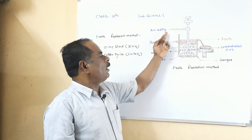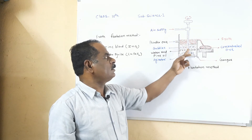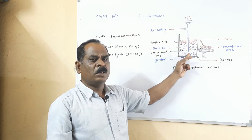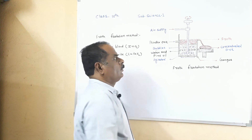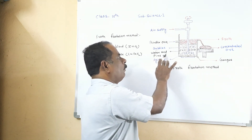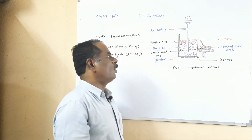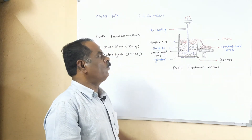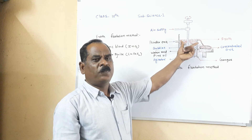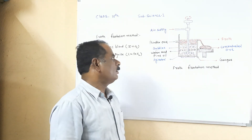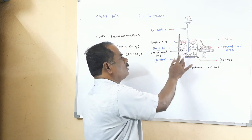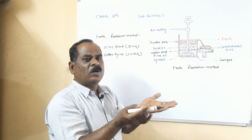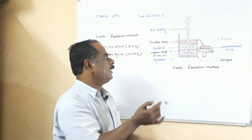When you blow high-pressure air through the agitators, the agitators move at the center. Due to this high pressure in the mixture, bubbles are formed — bubbles of water, pine oil, and sulphide ore. These bubbles come to the surface of the water in the form of froth. The agitators produce bubbles in the mixture and they float on the water. This froth contains the concentrated sulphide ore wetted with oil.